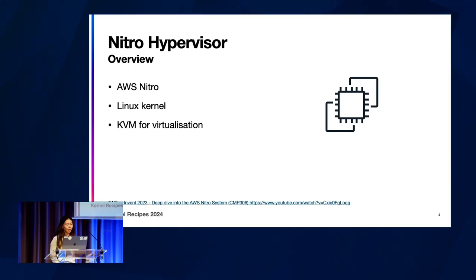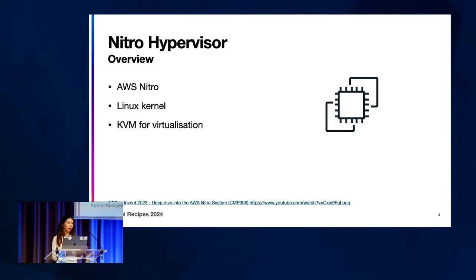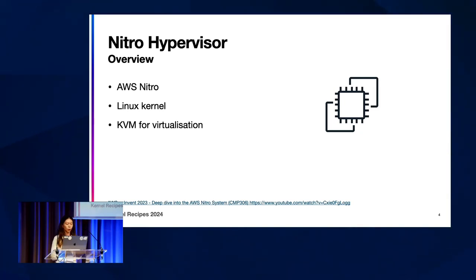The Nitro hypervisor is called that because it's inside the AWS Nitro subsystem. The major thing we did differently is we took networking and block storage out of the hypervisor — it lives on dedicated hardware, handled by other software components like ENA and EBS for EC2. The Nitro hypervisor uses the Linux kernel and KVM module for virtualization.